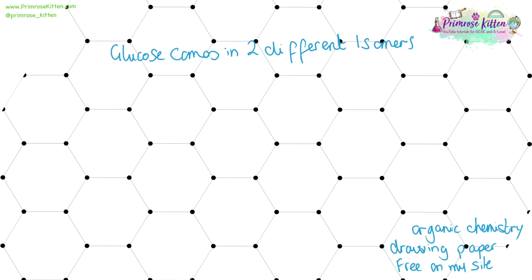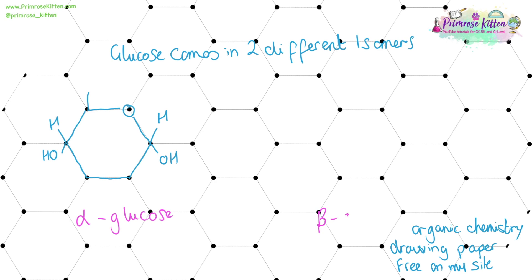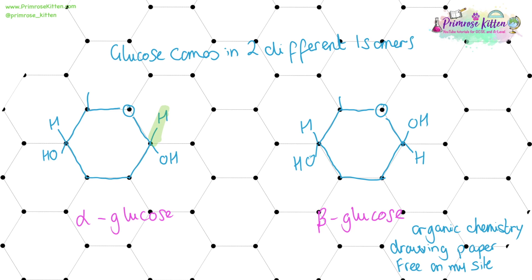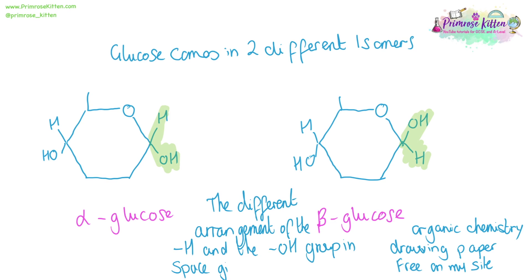There are two different isomers of glucose: alpha-glucose and beta-glucose. You need to know how to draw these and the differences between them. You can see the difference on the right-hand side, with the spatial arrangement of the hydrogen and the OH group.